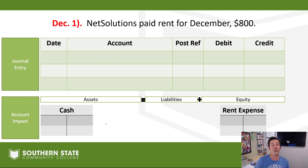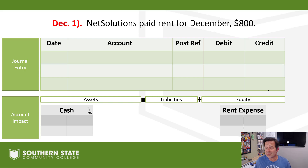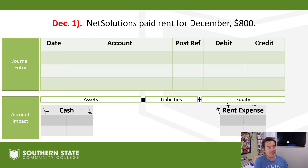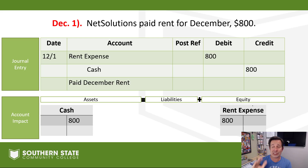December 1st again — NetSolutions paid rent for December. We've got two accounts in play: a cash account, because we'll be paying cash, which needs to go down; and rent expense, which needs to go up. Expense accounts always, always go up on the debit side. Asset accounts go up on the left and down on the right. The entry is a debit to rent expense and a credit to cash. Hopefully you came up with that.